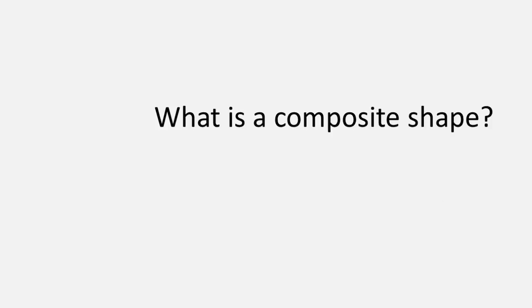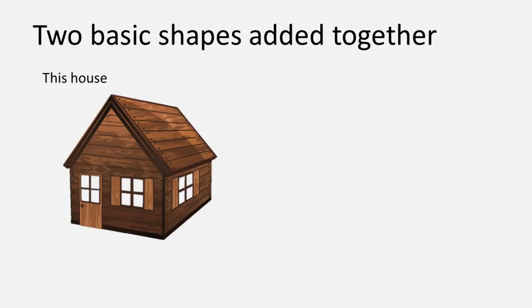So what is a composite shape? A composite shape is a combination of two or more three-dimensional objects.